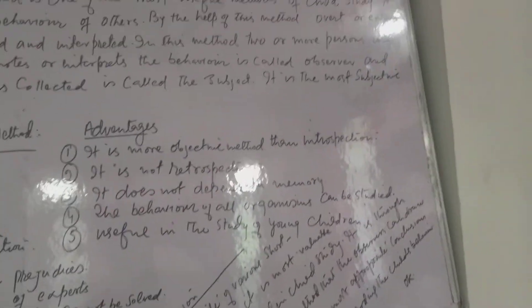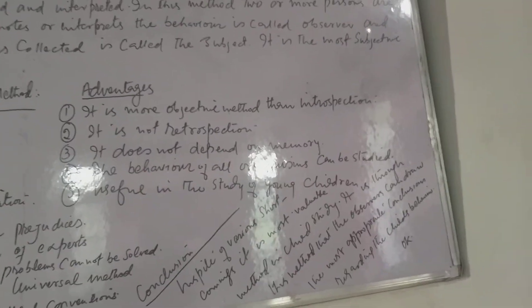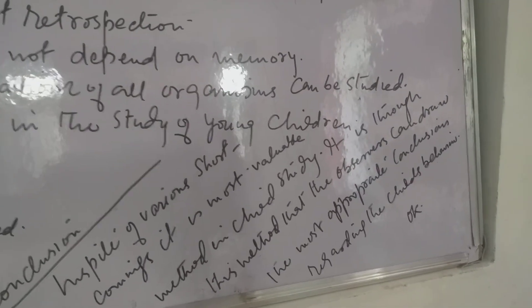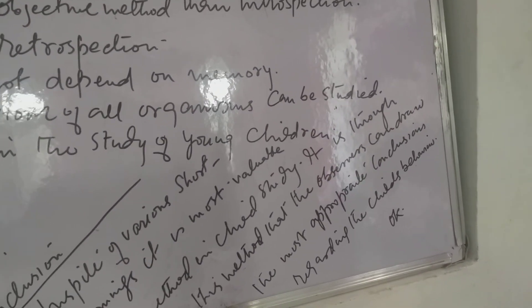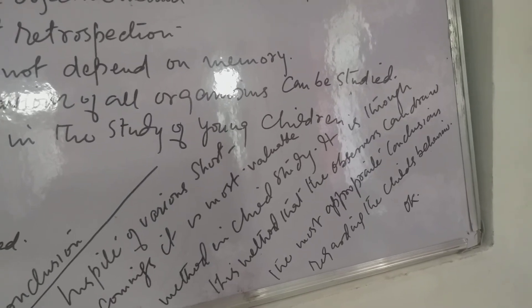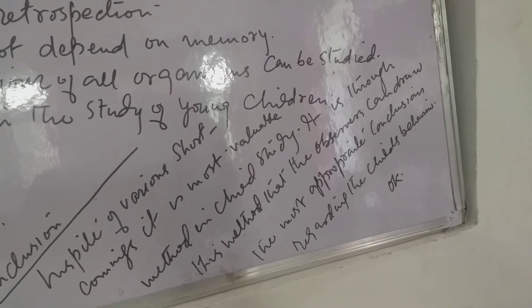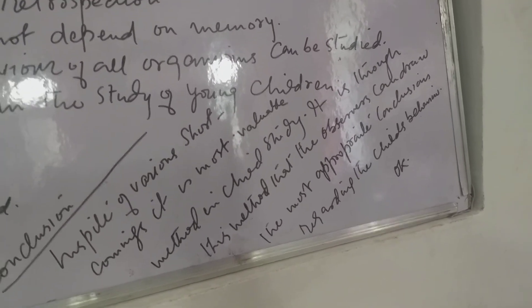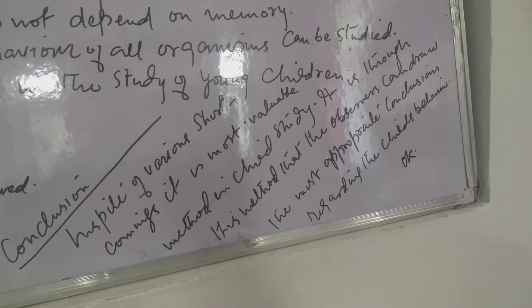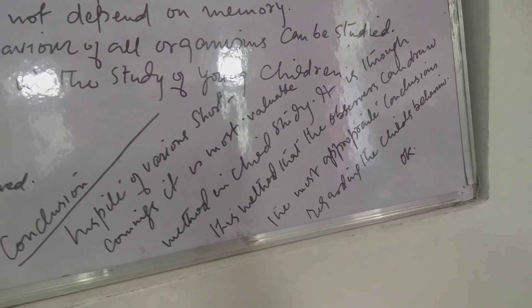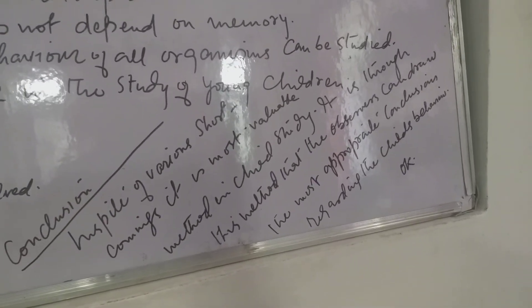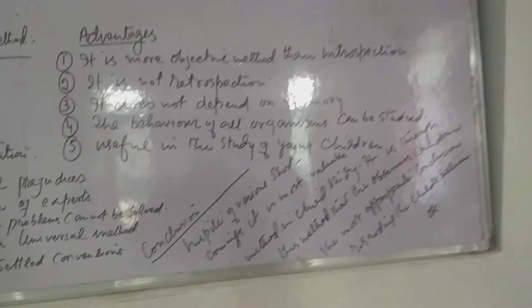But in spite of the above various shortcomings, it is undoubtedly the most valuable method in child study. It is through this method that observers can draw the most appropriate conclusions regarding the child's behavior. Some aspects of human behavior are so changeable and complicated that one can only be satisfied by observation. The observation method has widened the field of psychology and made it more useful in our day-to-day life.